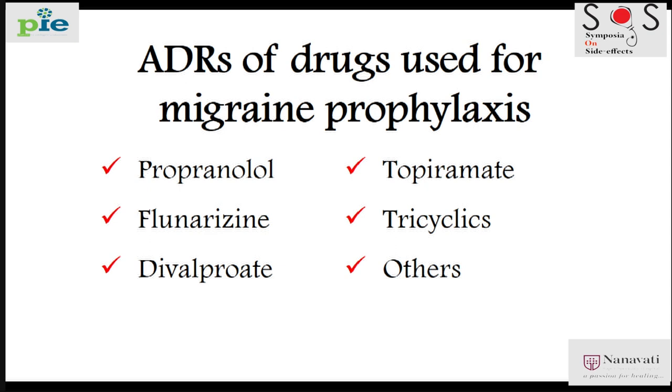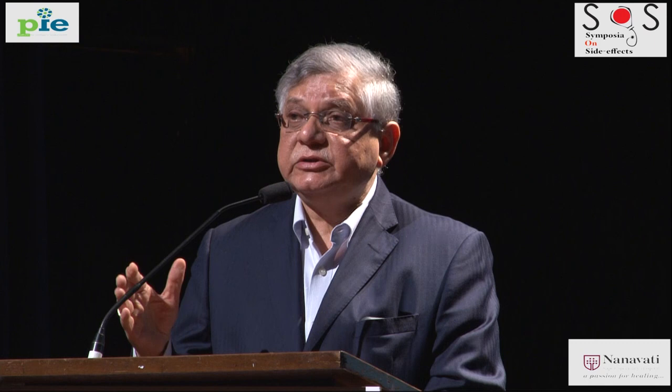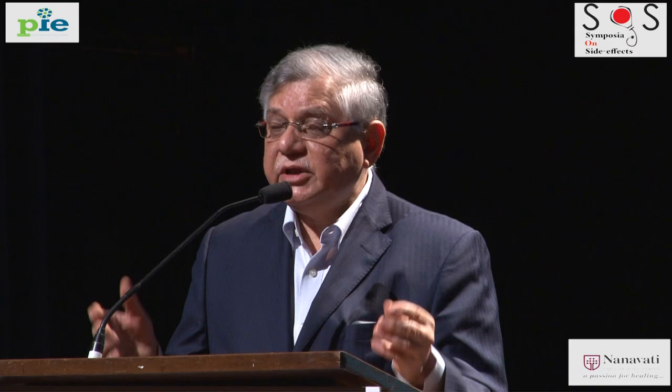For frequent attacks, the criterion we use is four days per month. Anybody who cannot tolerate acute attack medicines or in whom they are not useful, and who gets at least three to four episodes per month with almost four days of rest per month, is a candidate for prophylactic therapy. My first choice, especially when stress is a precipitating factor, is amitriptyline 10 mg at bedtime. Two to six months continuously probably works. Side effects are mostly dryness of mouth and constipation — it does not cause so much weight gain, but it does produce grogginess initially.